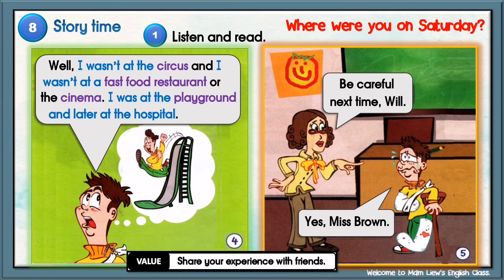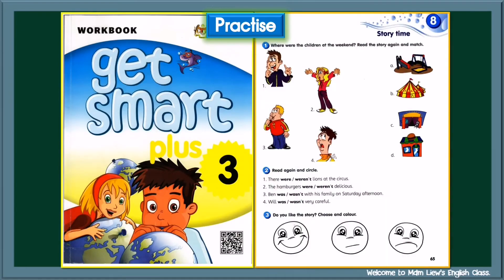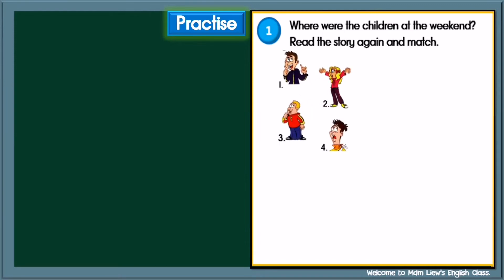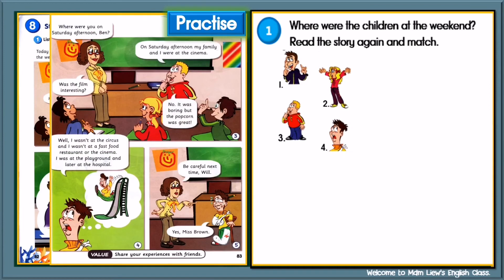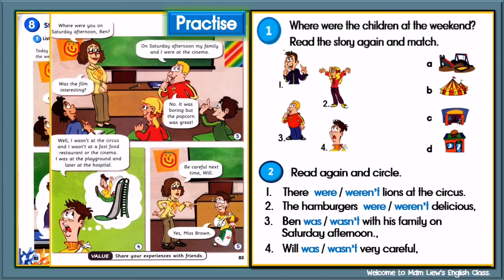Children, you can listen to the story again and practice reading it. Now let's practice. Look at your workbook, page 65. Let's try activity 1 and activity 2. Activity 1: Where were the children at the weekend? Read the story again, find out where the children were, and match them with the pictures. After you have finished activity 1, move on to activity 2: Read the story again and circle the correct answers. After you have finished your work, continue watching — we shall discuss the answers at the end of the lesson. Good luck!